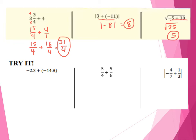So next I want you to pause the video right now and give these three problems a shot. We're adding two negatives here as decimals. Here we have fractions, so again rational numbers. And here we have the absolute value of adding some rational numbers. So pause the video and see what you get.